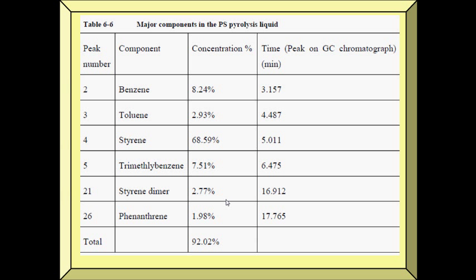Here you can see the major components in PS pyrolysis liquid: benzene 8.24%, toluene 2.93%, styrene — which has the highest concentration at 68.59% — trimethyl benzene 7.51%, indene 2.77%, and naphthalene 1.98%, for a total of 92.02%.